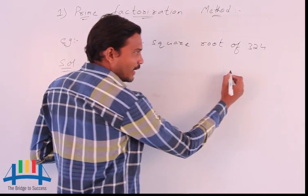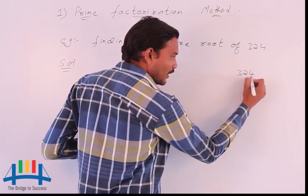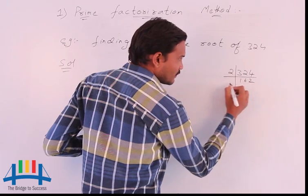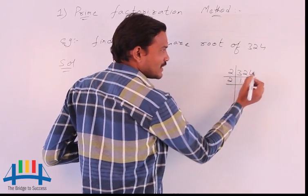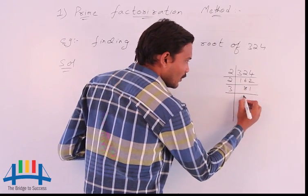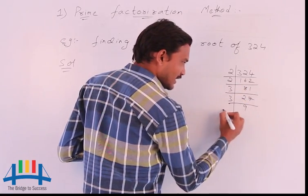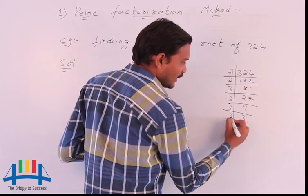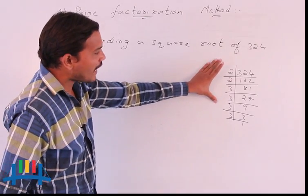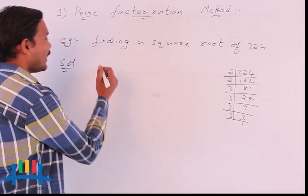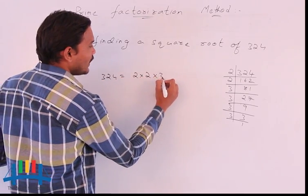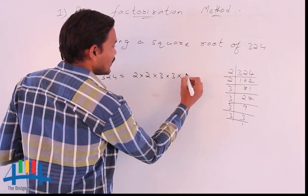We do this by taking the LCM. I am taking the LCM of 324: 2 times 162 is 324, 2 times 81 is 162, 3 times 27 is 81, 3 times 9 is 27, 3 times 3 is 9, and 3 times 1 is 3. So the prime factors of 324 are: 324 = 2 × 2 × 3 × 3 × 3 × 3.